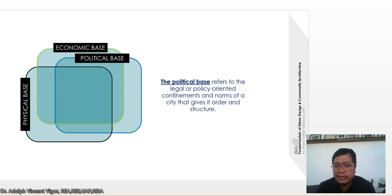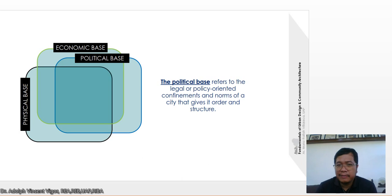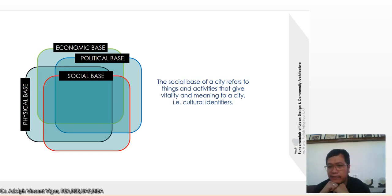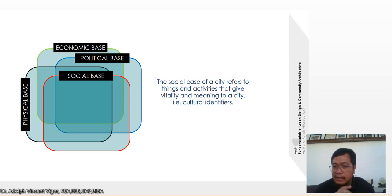The political base refers to the legal or policy-oriented confinements and norms of a city that give it order and structure. The social base refers to the things and activities that give vitality and meaning to a city — for example, cultural identifiers. In more advanced cities like Hong Kong, you find science centers and museums as cultural identifiers.